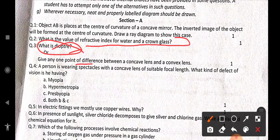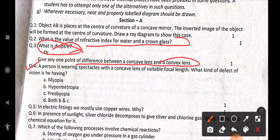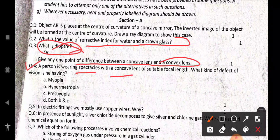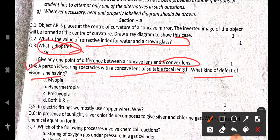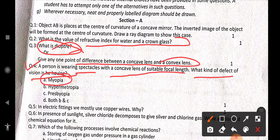Give any point of difference between concave lens and convex lens. You will easily get this in the book or reference. Let's do this from question number 4. A person is wearing spectacles with a concave lens of suitable focal length. What kind of defect of vision is he having? The answer is myopia.